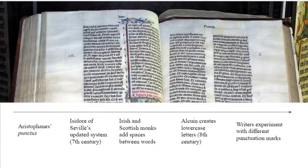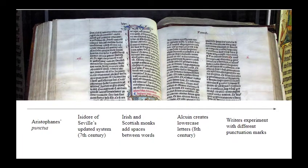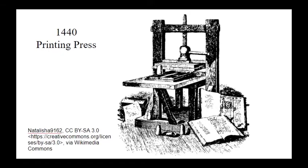So we've got the original punctus of Aristophanes, an updated system, and Irish and Scottish monks adding spaces. Then Charlemagne commissions a monk to come up with a new alphabet and we get lowercase letters. At this point we have lots of writers experimenting with different punctuation marks — for example, a mark that looked like a semicolon or a prototype of the question mark, and an Italian writer who suggested a system of dashes and slashes. But something happened that caused all these variable marks to coalesce into the marks we recognize today: the invention of the printing press. Once you've got a little piece made out of metal, you're not going to change it, and the text using particular marks is going to be sent to thousands of people. You can see how within 50 years or so, punctuation sort of became standardized.